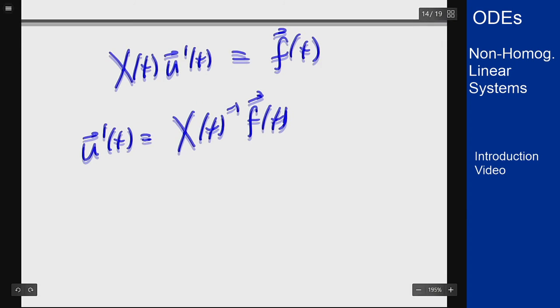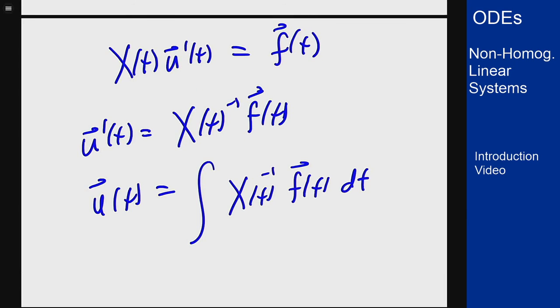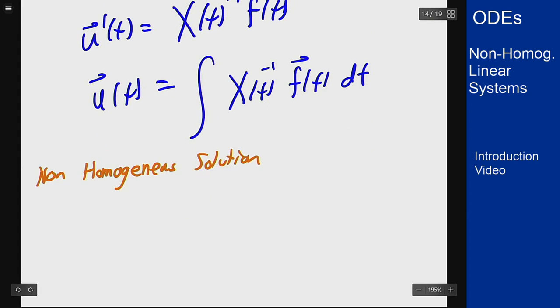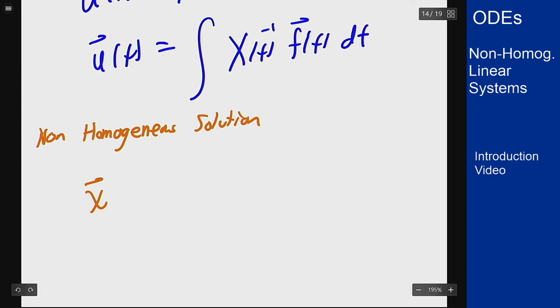I can then integrate and that will give me my solution by multiplying my fundamental matrix X by this vector here. So the non-homogeneous solution will be of the form x(t) = X(t) times integral of X(t)^(-1)*f(t) dt.